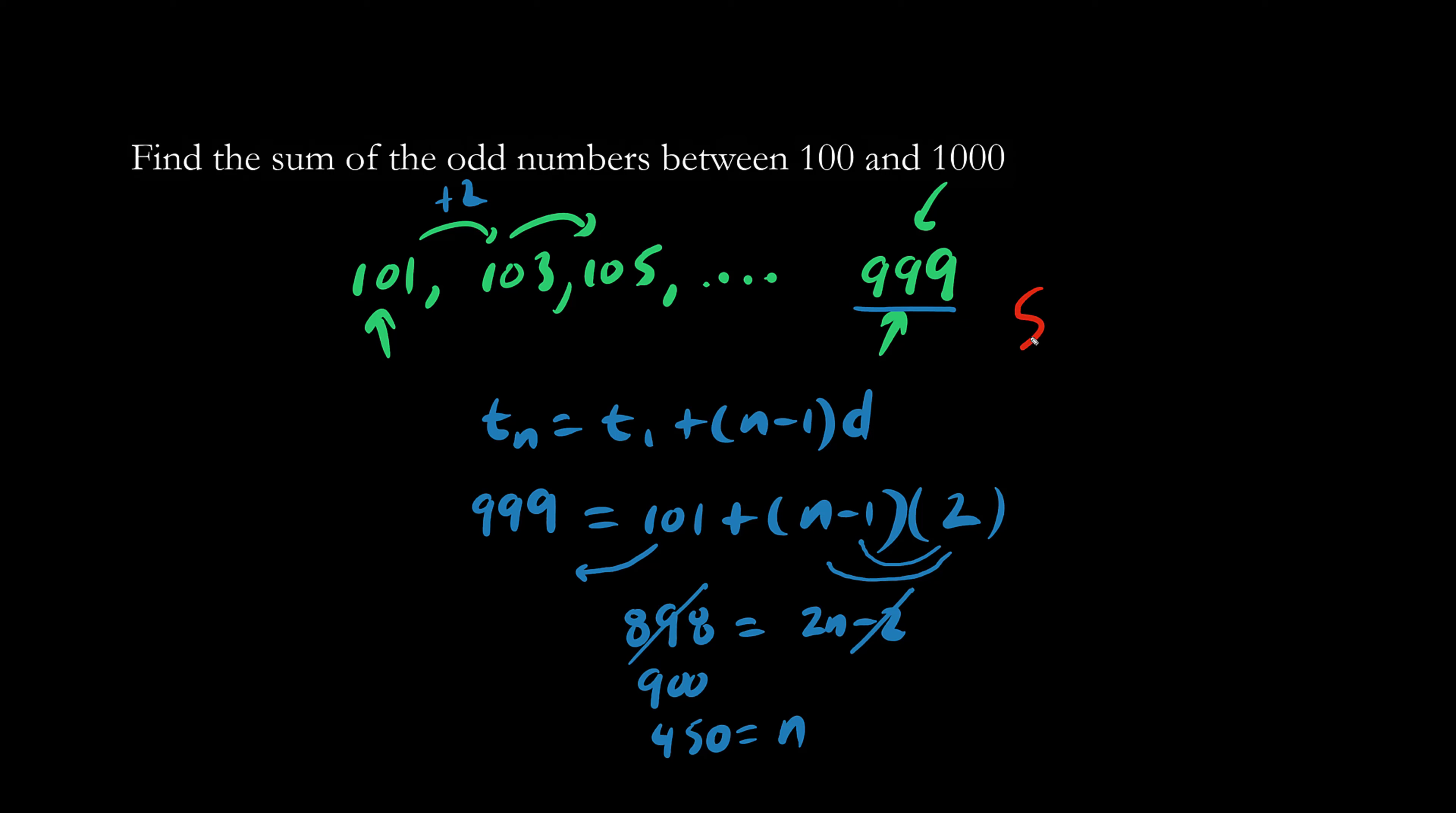So let's use the formula. Sn equals n over 2 times the quantity T1 plus Tn.